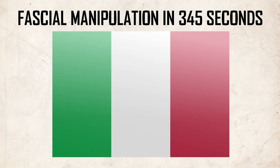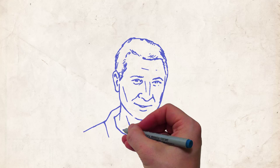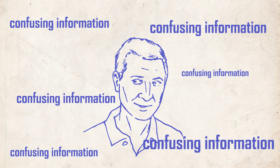Once upon a time, there was a young man called Luigi Stecco. He was frustrated with all the confusing information around him. He wanted to make it clear and help people the best way he could.